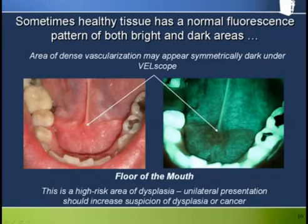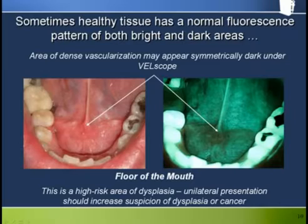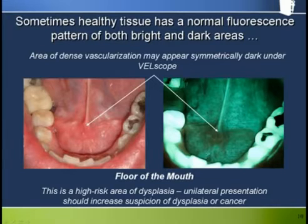This is a Velscope picture of the floor of the mouth and the corresponding area under white light illumination. The ventral surface of the tongue is also partially visible at the back. Again we see the theme of blood's role as a strong absorber in fluorescence visualisation. The area around the sublingual gland can be well vascularised and is particularly so in this example, showing up as a symmetrically dark area under Velscope.